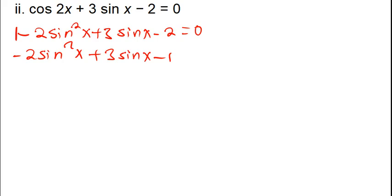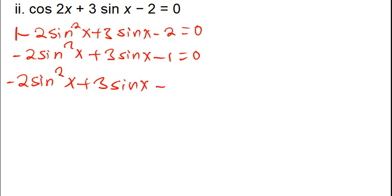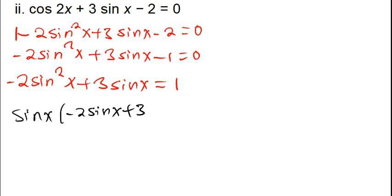I'll shift the negative 1 to the other side: negative 2sin²x + 3sinx = 1. Now I'll factor out sinx: sinx times (negative 2sinx + 3) = 1. This means sinx = 1 and what's in the brackets also equals 1.